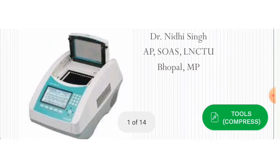PCR is run using machines from different companies such as Thermo and Sigma. These companies launch their own machines, and you set the program and run it for a particular time. At the end, you will get a 2^n times amplified product.